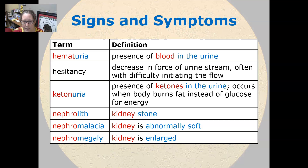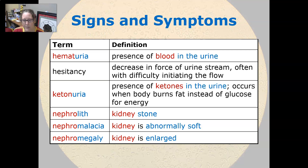Ketonuria is the presence of ketones in the urine that occurs when the body burns fat instead of glucose for energy. A nephrolith is a kidney stone. Nephromalacia is a kidney that is abnormally soft.